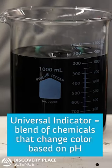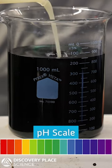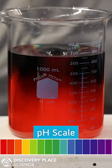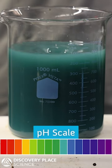Universal indicator is a blend of different chemicals that change color based on pH. Acids will turn the solution red, while bases will show up as blue or purple.